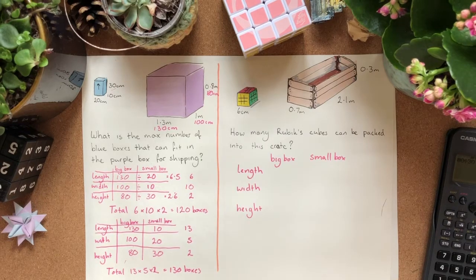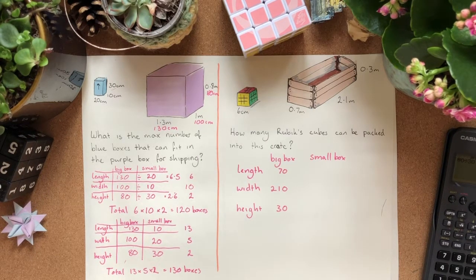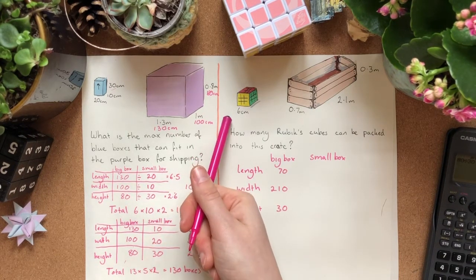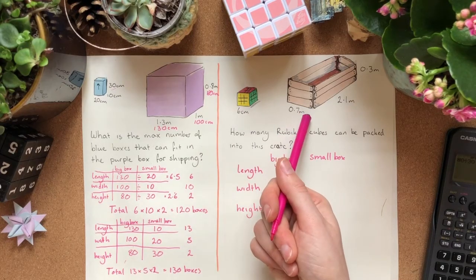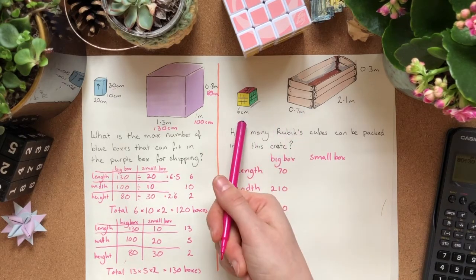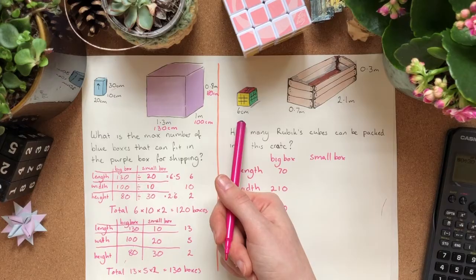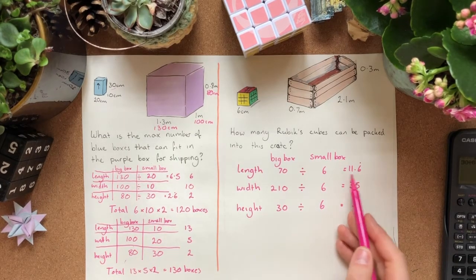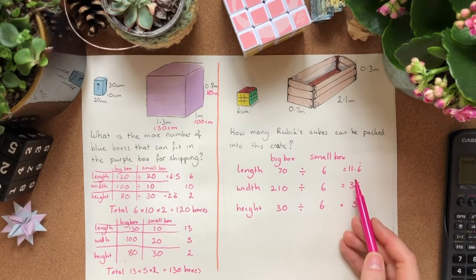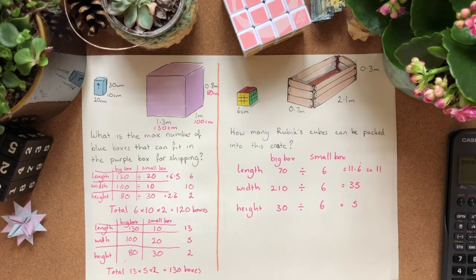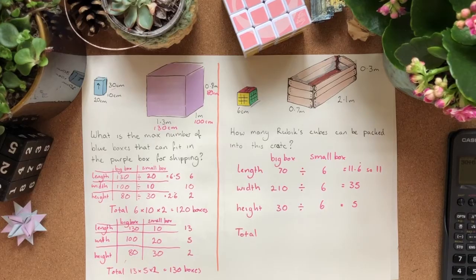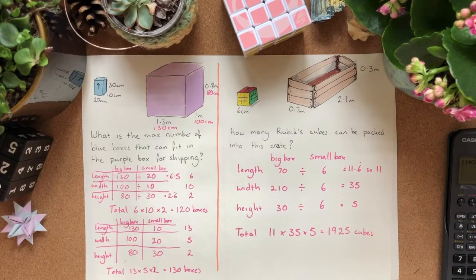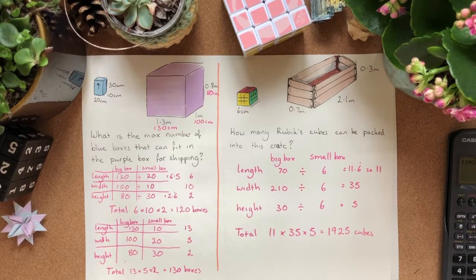Set up the table. Fill in the information for the big box. Make sure you do it in the same unit. So this is in centimeters. You want this to be in centimeters as well. Or you could make this into meters, but that would be a very weird sum. Since this is a cube, they're all the same. Do your division. Know that there's no such thing as 0.6 recurring of a Rubik's cube. And so we have to round down. And then find the total by multiplying. Wow, that is a lot of cubes. 1,925 cubes.